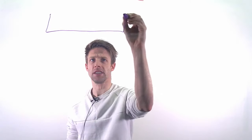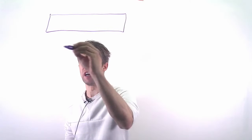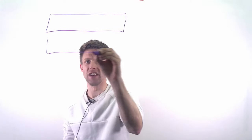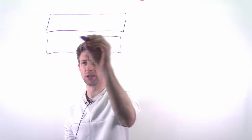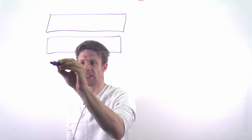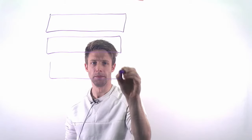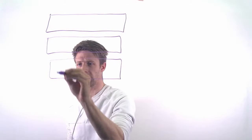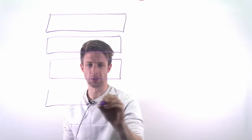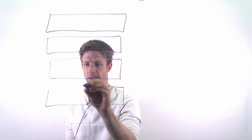Next up in our list of architectural styles is the layered architecture. As the name suggests, we have a number of layers that are on top of each other. This is how we structure our system.